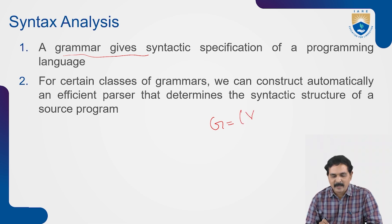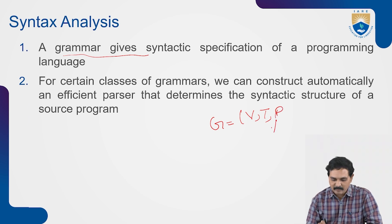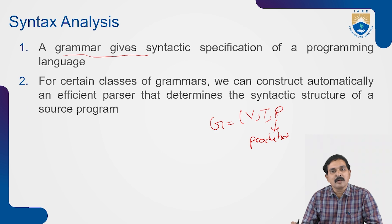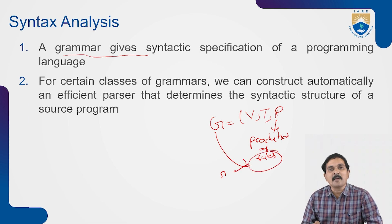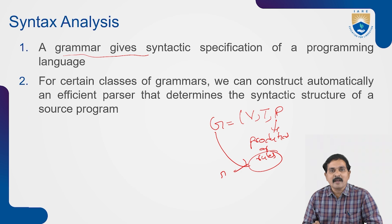Grammar G equals four variables: V (set of variables), T (set of terminals), P (set of productions, also called rules), and S (starting symbol). P defines the productions, also called rules. With the level of grammatical rules, you derive some grammatical structure, which is called a syntactic structure.